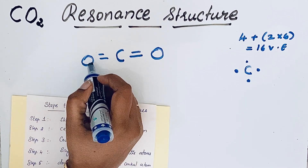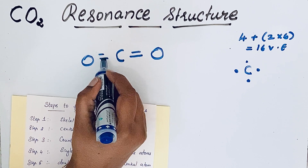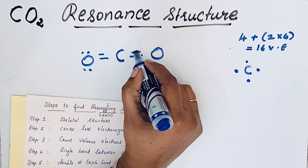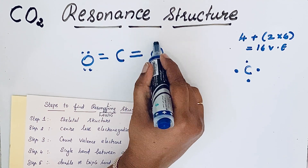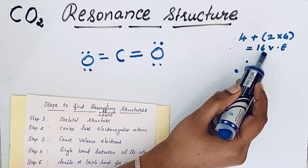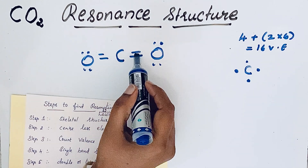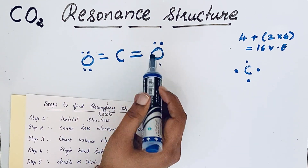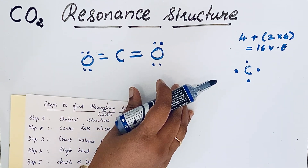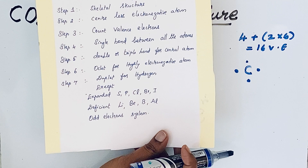Step six: complete the octet for the highly electronegative atom — oxygen. Oxygen already has two bonds, so: 2 + 2 + 4 = 8 electrons, satisfying the octet. The same applies to the other oxygen. Counting total valence electrons: 2, 4, 6, 8, 10, 12, 14, 16 — we have 16 valence electrons, confirming this is the correct Lewis structure.